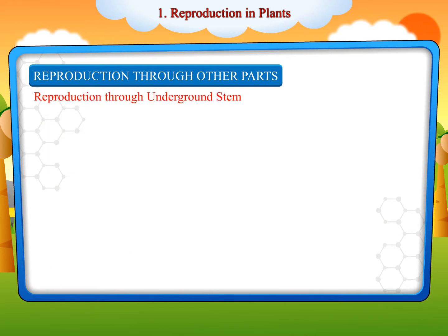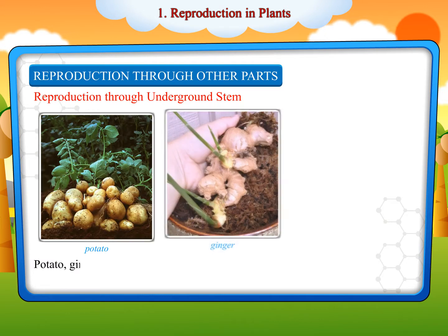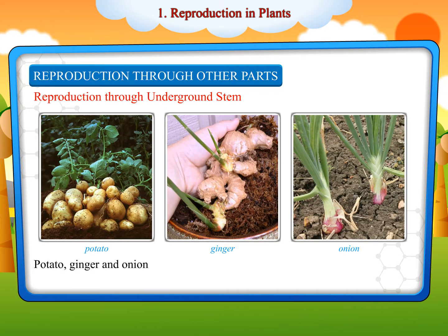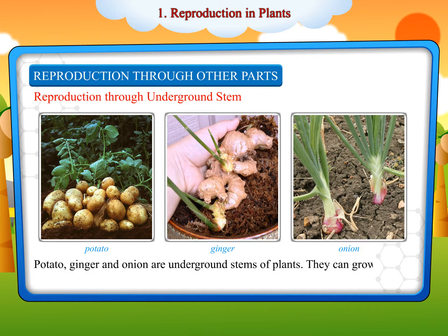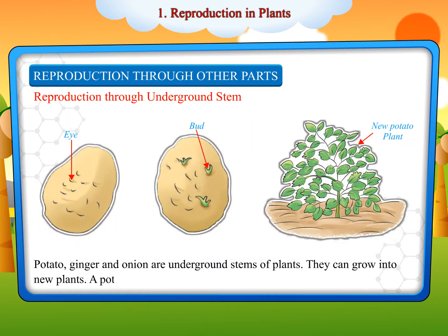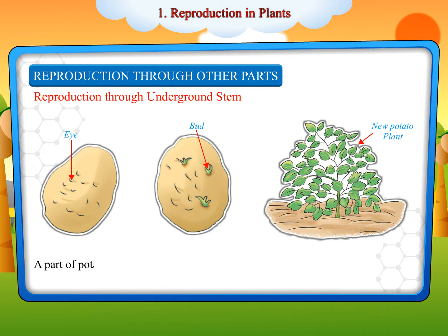Reproduction through underground stem: Potato, ginger and onion are underground stems of plants. They can grow into new plants. A potato has buds on it called eyes. A part of potato bearing an eye can grow into a new plant.